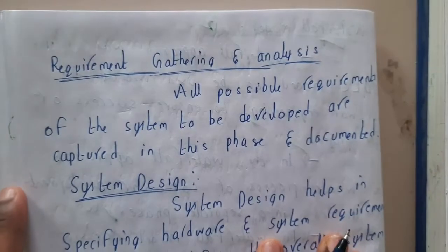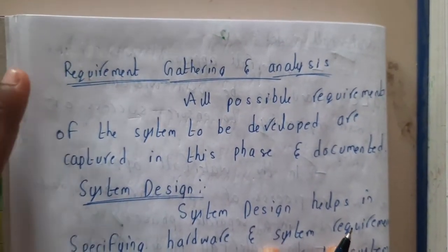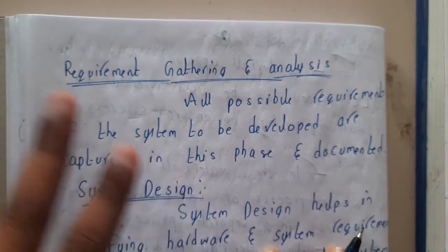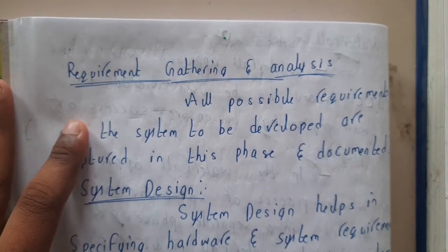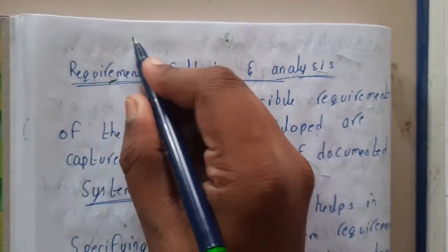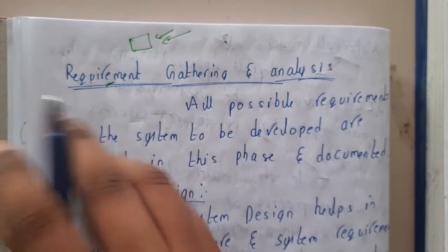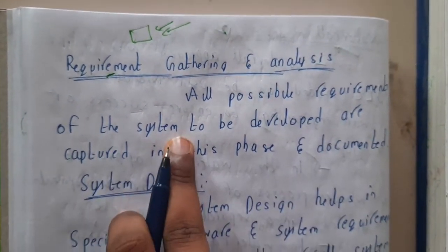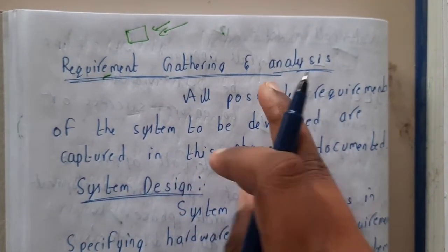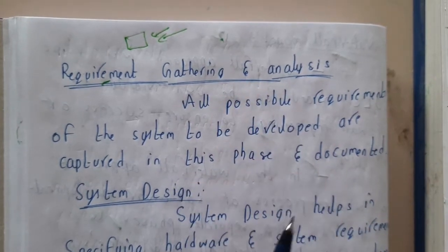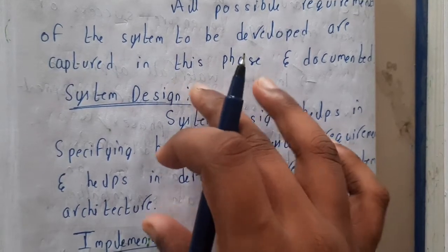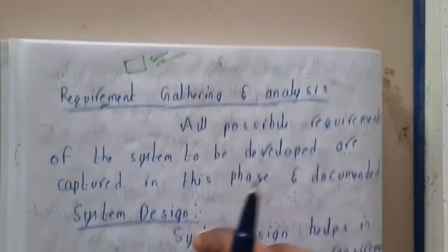These phases were discussed in detail in the SDLC lecture, so only additional aspects are covered here. In requirement gathering and analysis, all possible requirements for the system to be developed are captured and documented, so they can be passed to the next step for use.